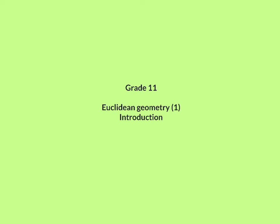Grade 11 Euclidean Geometry: an introduction. Euclidean Geometry is a very precise chapter. You can never say something like 'because it's clear on the picture,' because it all depends on from what angle you are looking at the picture.